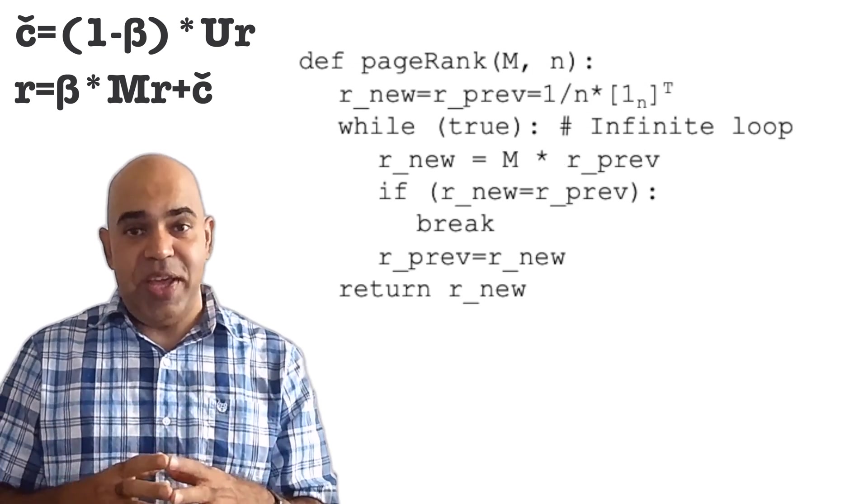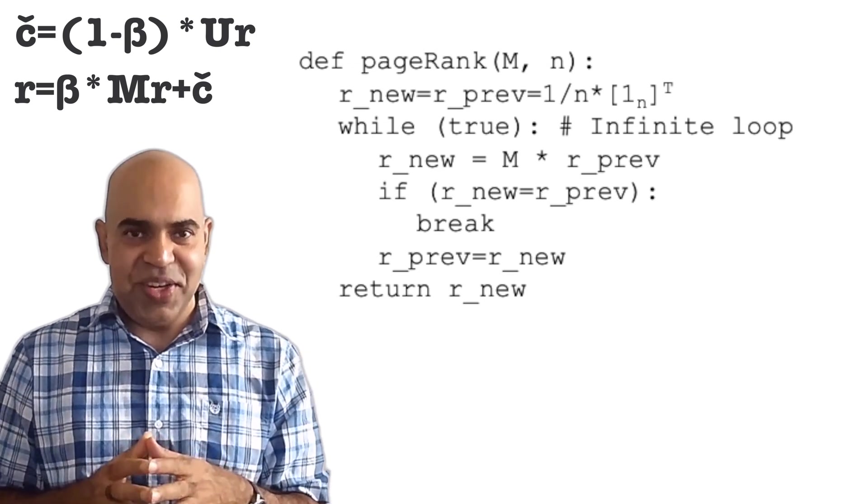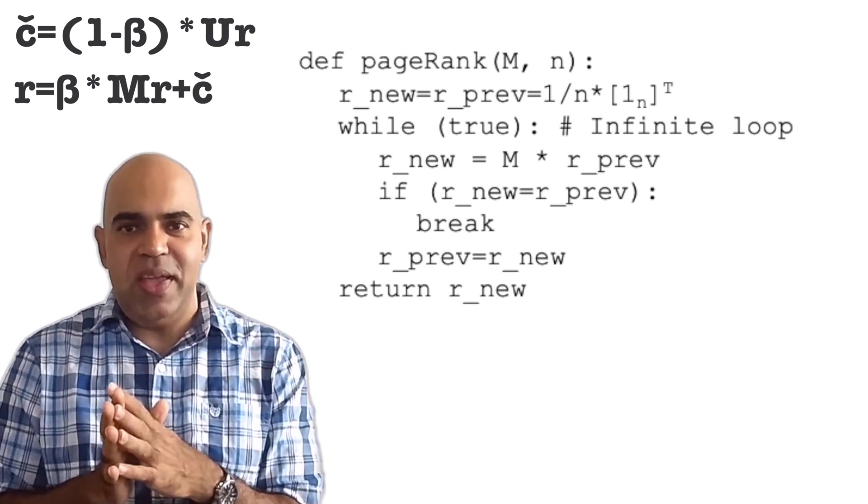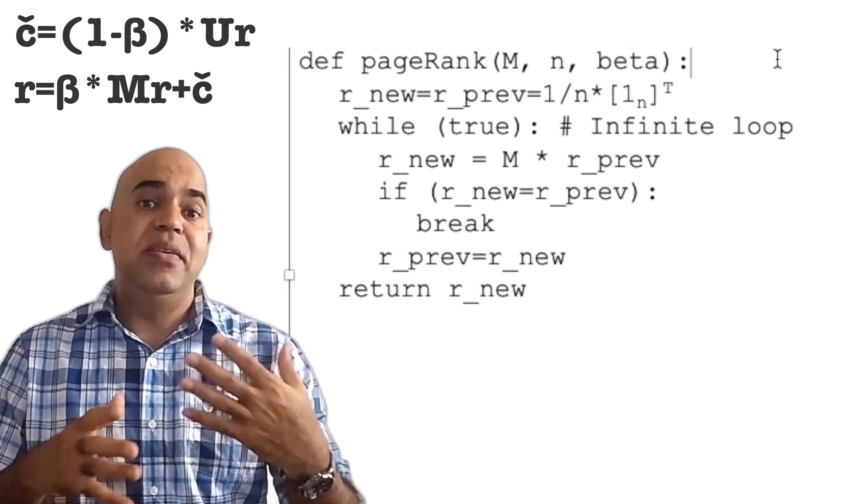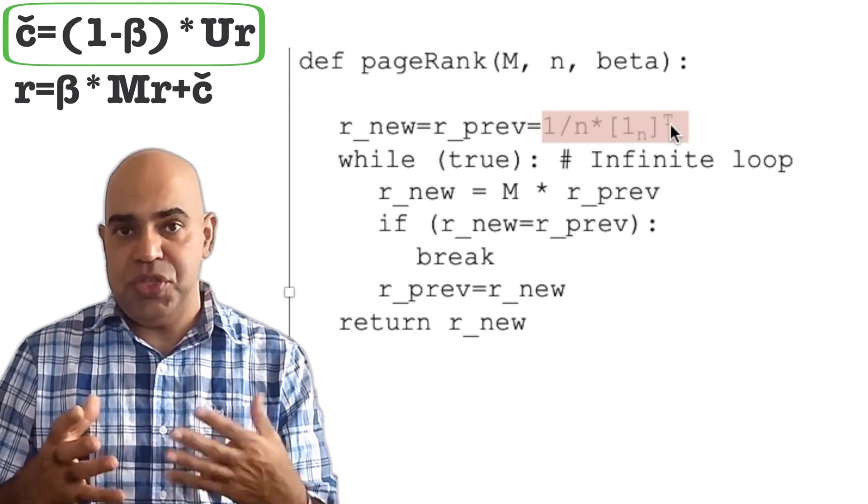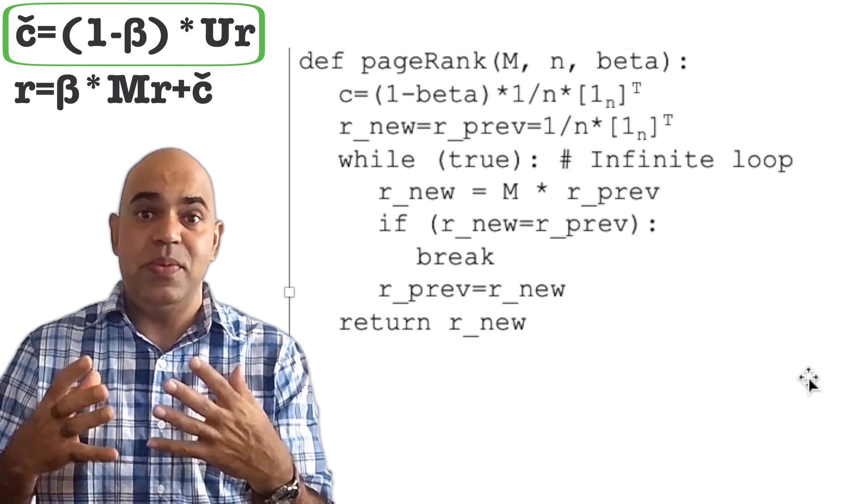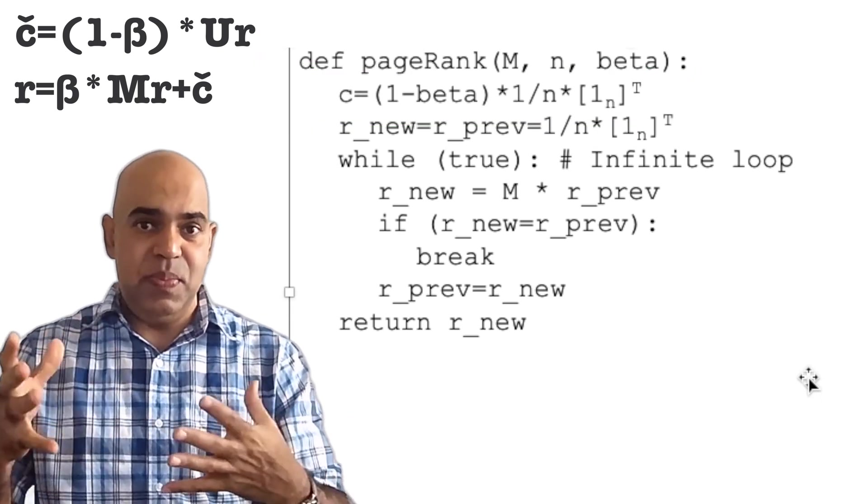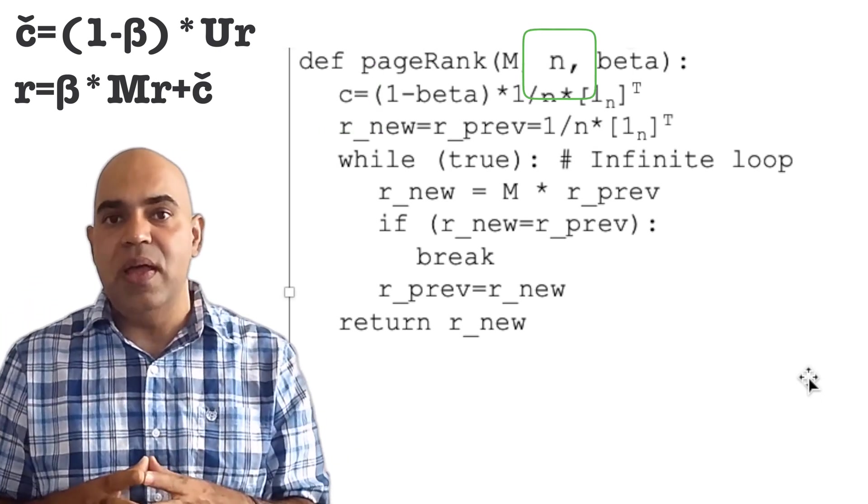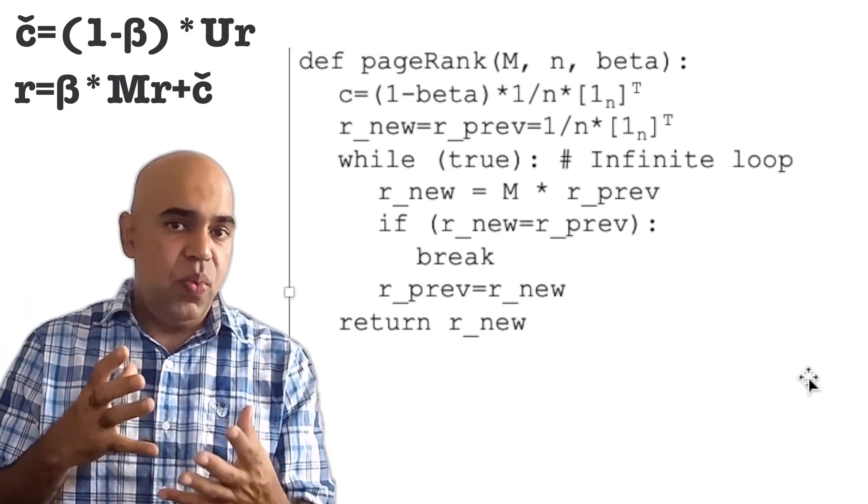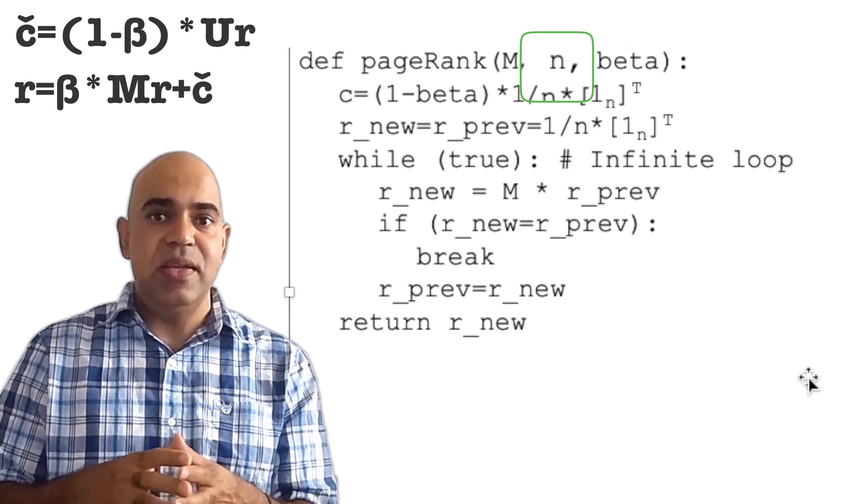Now, how do we change the pseudocode of our page rank algorithm to incorporate the teleportation capability? This is how we make the change. We have an additional parameter beta. We create this constant C, which is 1 minus beta times a uniform column vector that sums up to 1.0. That means the number of elements in the column vector C will be the number of websites. Each cell will contain a value equal to 1 minus beta times 1 over N where N is the number of websites.